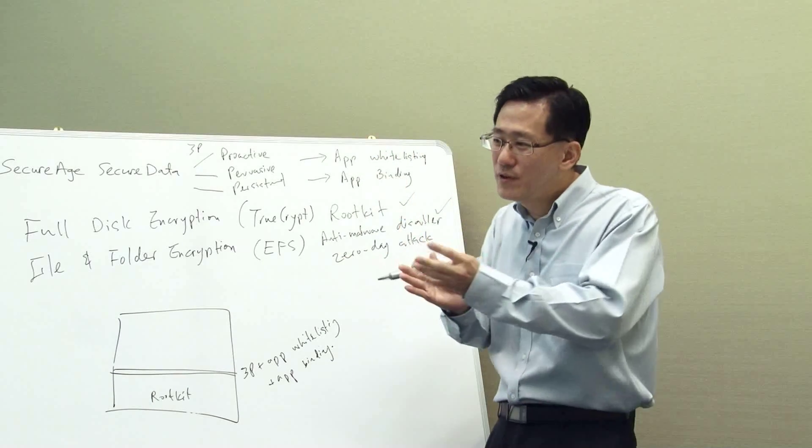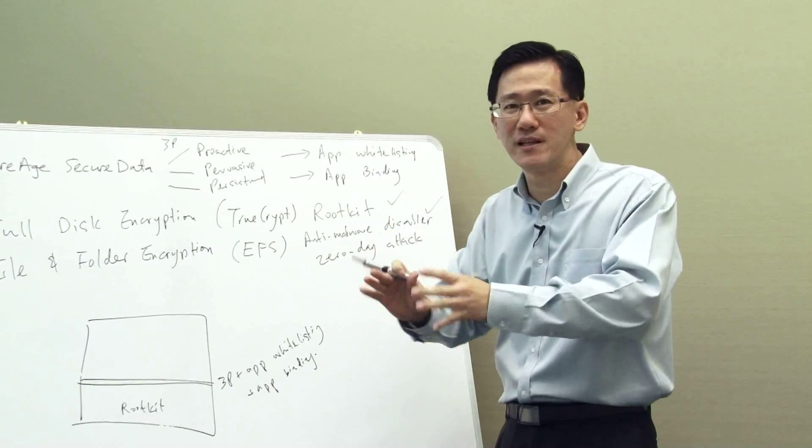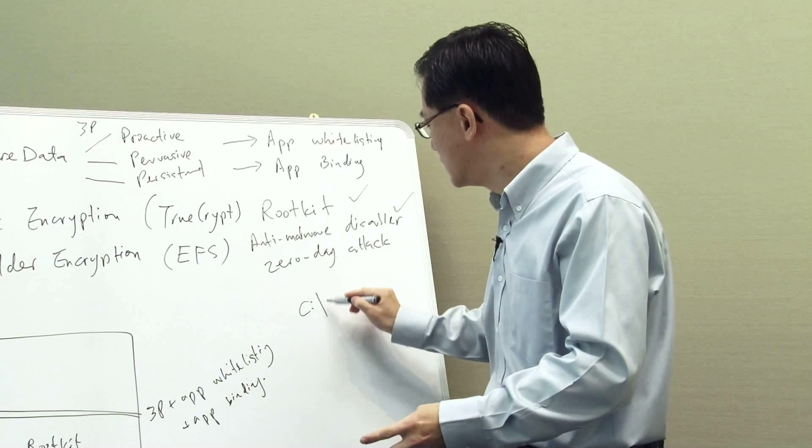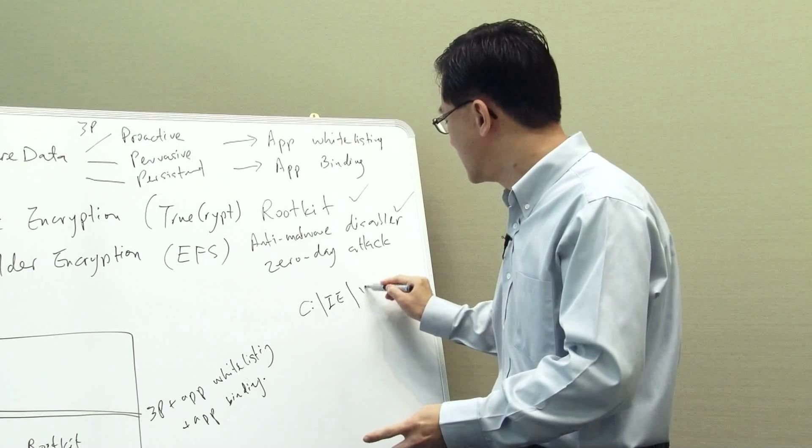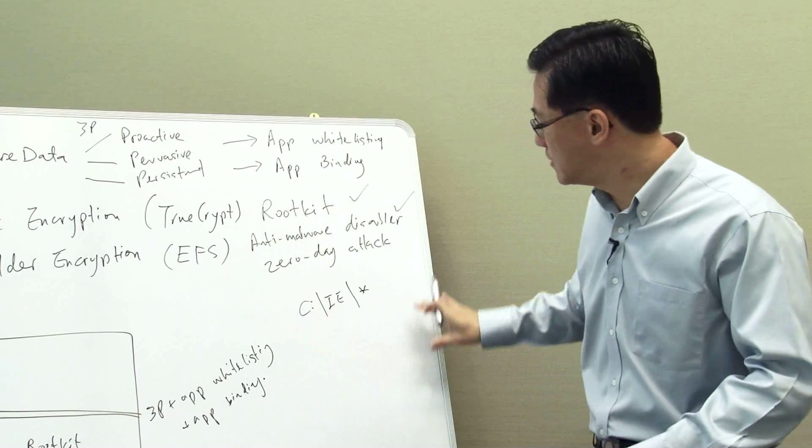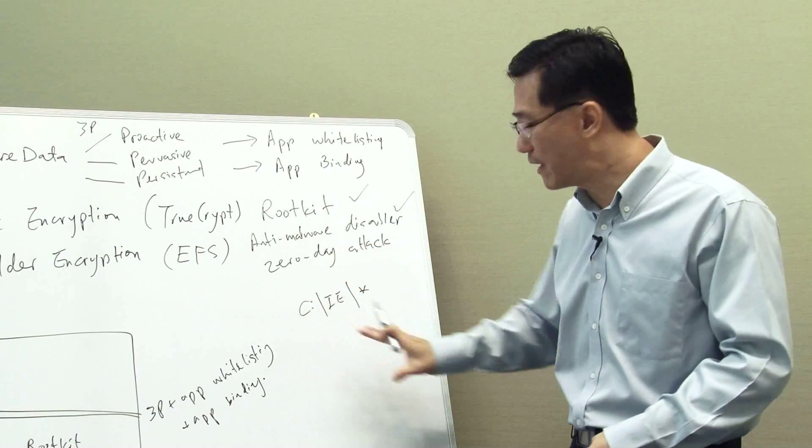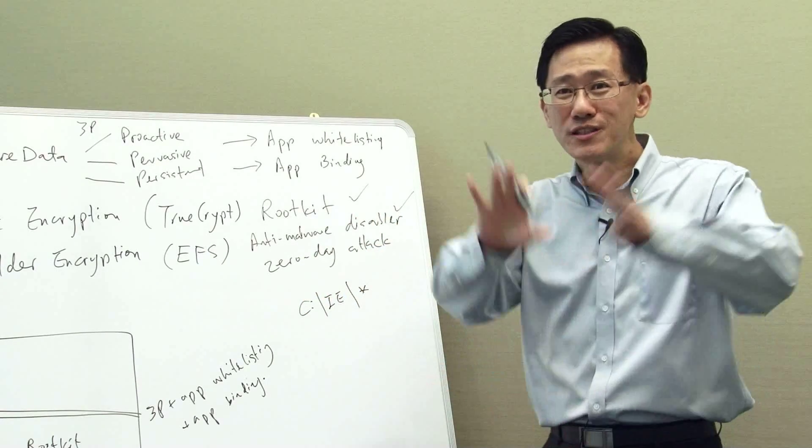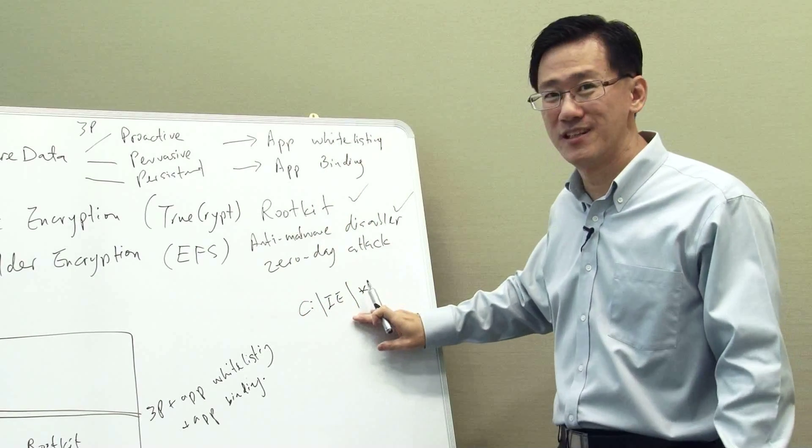For those cases, the application binding can create something called a sandbox, in which it says that this particular application can only read and write to a specific directory in your system. Okay, maybe something like C colon IE slash star. So IE can only read everything within this directory and write any malware if you get any malware and write only appear in this directory.